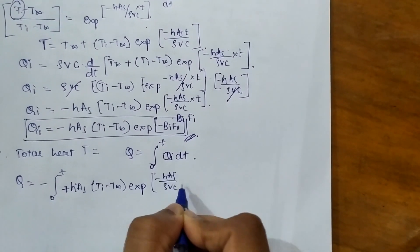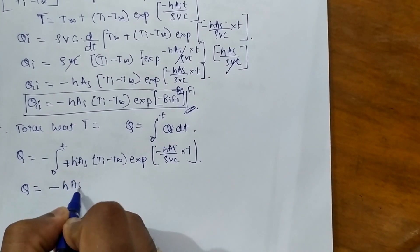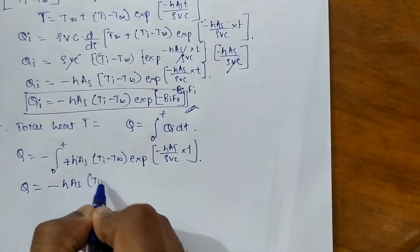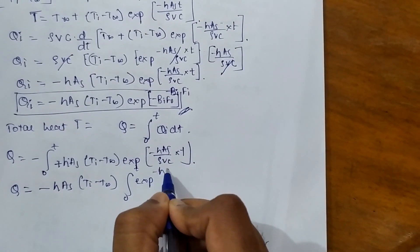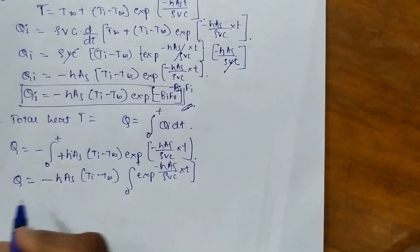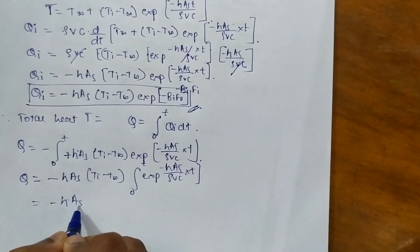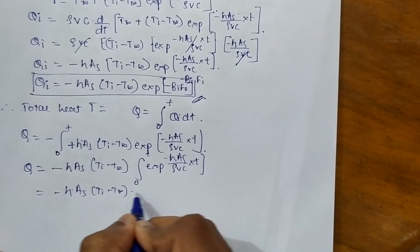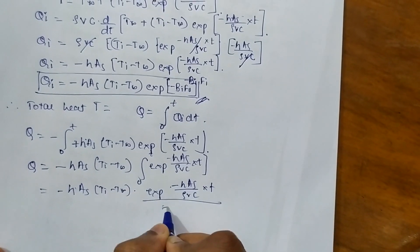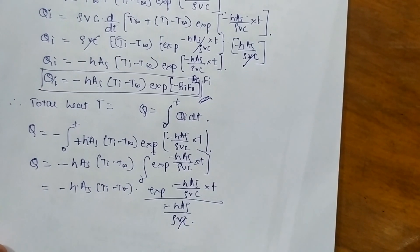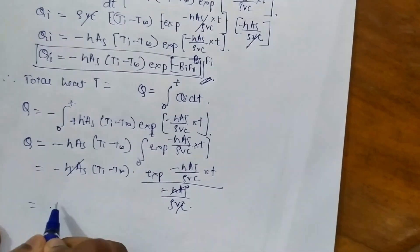Evaluating the integral: Q = -h·As·(Ti - T∞) · [exp(-h·As / ρVc · t) divided by (-h·As / ρVc)], where the h·As terms cancel with the denominator.